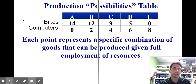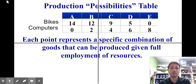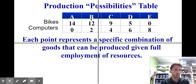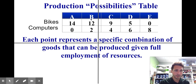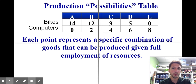At point B, if I decide I want some computers, I'm going to produce 12 bicycles and two computers. If I'm producing two more computers, that means I'm losing two bikes. In other words, to choose to produce two more computers, the cost — choice has a cost — is two bicycles. So when I went from A to B, I chose two more computers and the cost was I lost two bicycles.